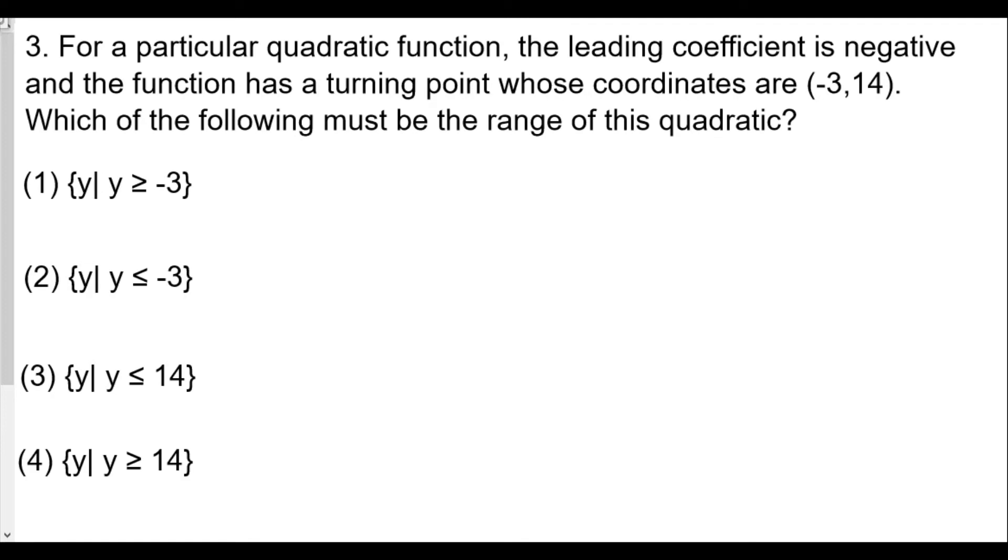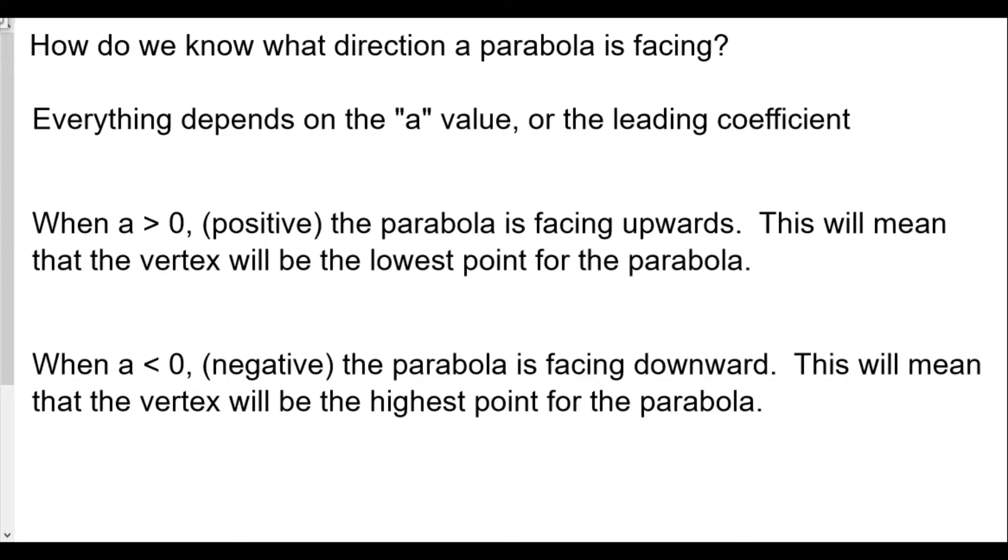For a particular quadratic function, the leading coefficient is negative and the function has a turning point whose coordinates are negative three comma 14. Which of the following must be the range of this quadratic? It all depends upon the facing of the parabola. How do we know what direction the parabola is facing? Everything depends on the a value or the leading coefficient. When the a value is greater than zero, positive, the parabola is facing upwards. This means the vertex will be the lowest point for the parabola. When the a value is negative, the parabola is facing downwards. This means the vertex will be the highest point of the parabola. The a value is the number multiplying the x squared, the leading coefficient.